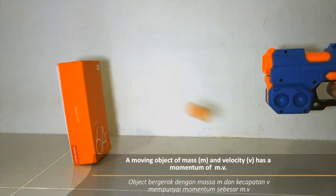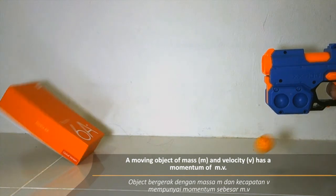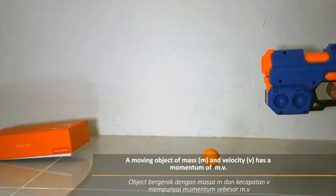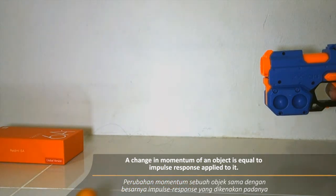A moving object of mass m and velocity v has momentum of mv. A change in the momentum of an object is equal to the impulse response applied to it.